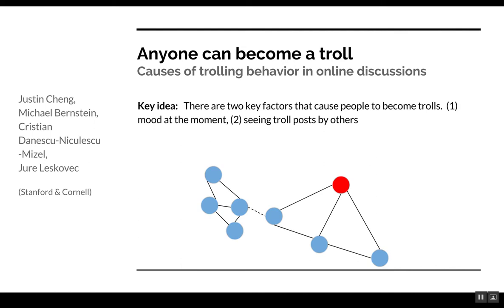Justin Chang, Michael Bernstein, Christian Danescu-Niculescu-Mizzell, and Jure Leskovec were all at Stanford at the time. Michael Bernstein is the faculty member there, now also at Cornell. They asked this great question: who are these people? In that social network diagram, the red dot represents somebody who's just antisocial—that's a troll. The key idea for this paper is that trolls are not Lord of the Rings-like orcs—they're not intrinsically evil people. In fact, it's a contextual response by almost anybody. So, what's causing this? That's the nature of this research.